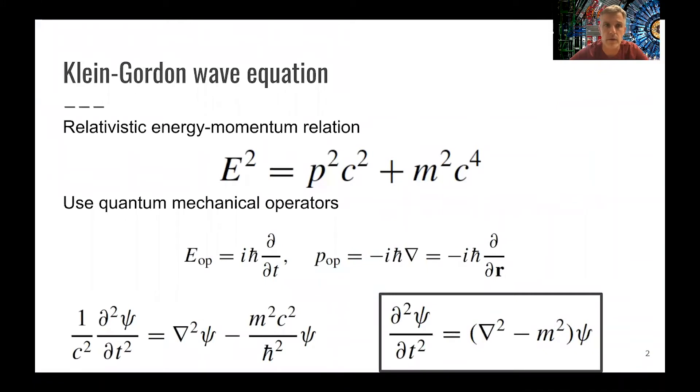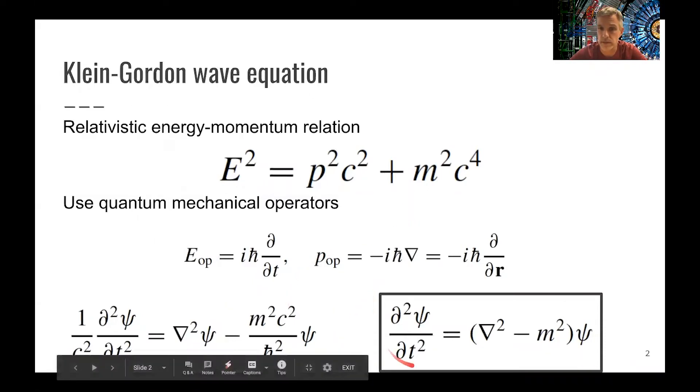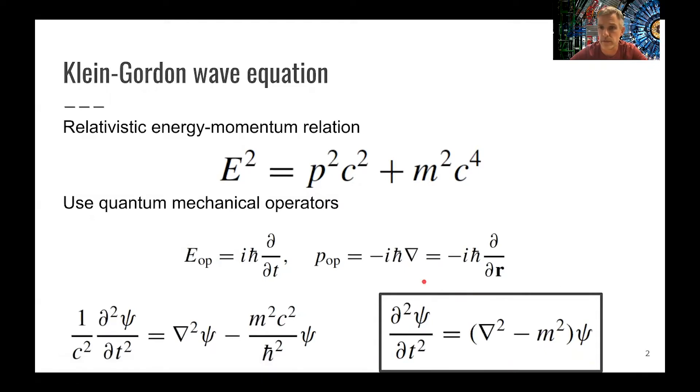So we start off with our relativistic energy momentum relation: E squared is equal to p squared plus m squared. We express energy and momentum via quantum mechanical operators. And so immediately by putting this in, we find this equation here, which is the so-called Klein-Gordon wave equation.